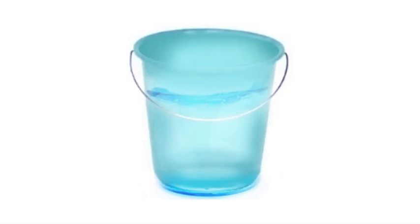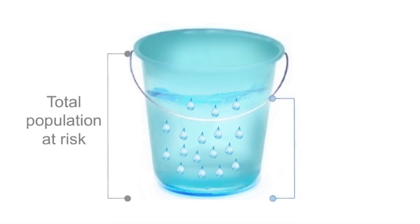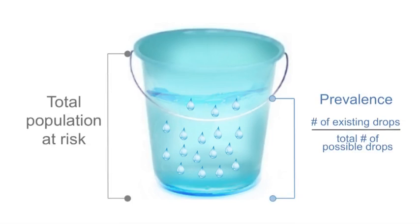To understand prevalence, imagine a bucket partially filled with water. Each drop represents an existing case of the disease or health outcome. The capacity of the bucket represents the total population at risk for the disease or health outcome. If we look at the bucket at one point in time, the number of drops — or existing cases — in the bucket divided by the total number of drops the bucket could hold is the prevalence.